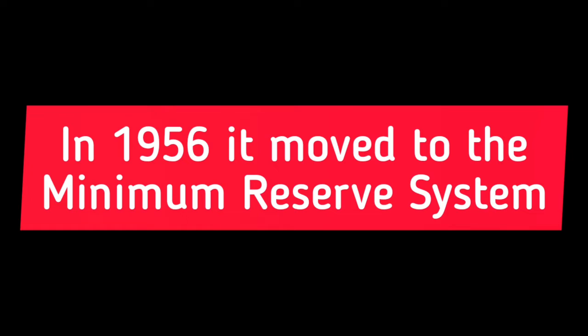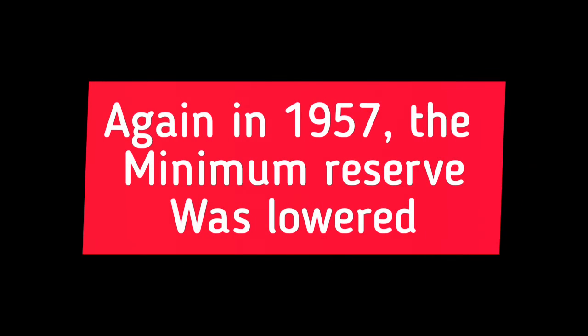The remaining 60% of the reserves were supposed to be covered by rupee coins and rupee securities of India. However, after independence, with the introduction of economic planning, it was felt that the Proportional Reserve System was not adequate for supplying the needs of the economy.